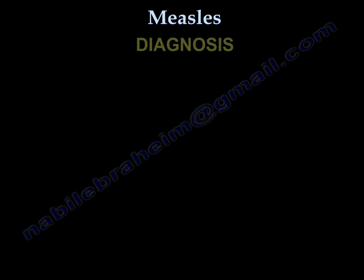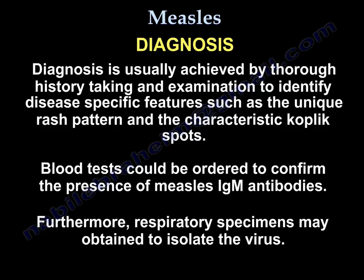Diagnosis is usually achieved by thorough history taking and examination to identify disease-specific features such as the unique rash pattern and the characteristic Koplik spots. Blood tests could also be ordered to confirm the presence of measles IgM antibodies. Furthermore, respiratory specimens may be obtained to isolate the virus.